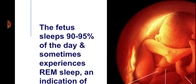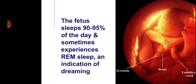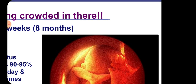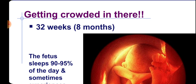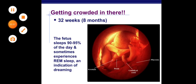The fetus sleeps for 90 to 95 percent of the day and sometimes experiences rapid eye movement sleep, which shows that it is dreaming. This is a fetus at 32 weeks, or 8 months.